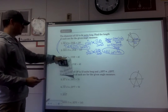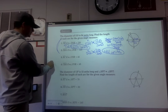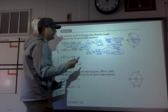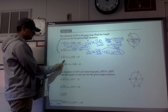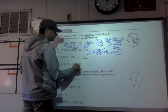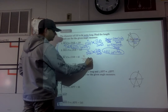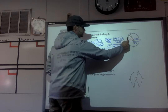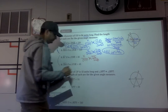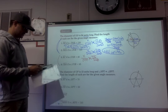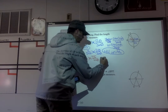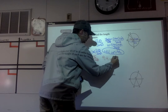This time, angle COB is 45 degrees, and we still have our diameter of 24. Let's find arc BC. Setting up: x over 24π equals 45 over 360. Cross-multiplying: 24π times 45 divided by 360 gives us approximately 9.4 units.